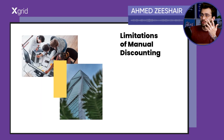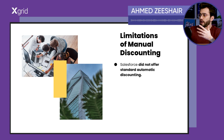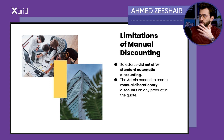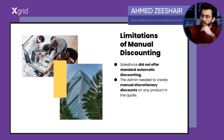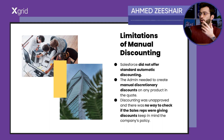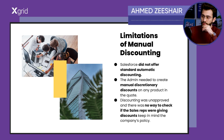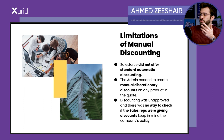The second problem was with giving discounts on products. Salesforce does not offer standard automated discounting, and admins needed to create manual discretionary discounts on any product in the quote. You can only use one type of discounting on the same product — automatic or discretionary. There was also no automated way of checking the discounted amount and improving it, so sales reps would often give discounts against the company's policies, which resulted in loss of revenue.